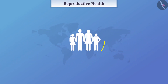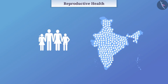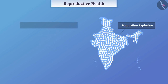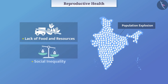If there is no control over childbirths, there is a problem of excessive population growth called population explosion, which causes problems such as lack of food and resources and social inequality. Therefore, every person should have the necessary information related to reproductive health.